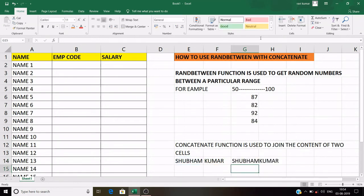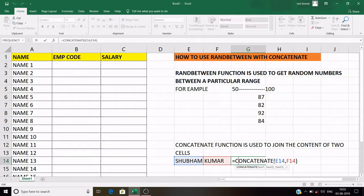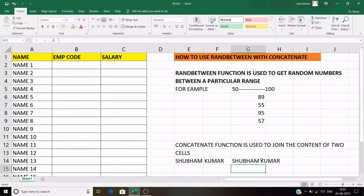Now press enter. You will see the name is get merged and it's a single name now, Shubham Kumar. Now if you want to put a space between this name, between Shubham and Kumar, so what will you do? Just put inverted comma with space and comma and enter, and the space becomes between Shubham and Kumar.